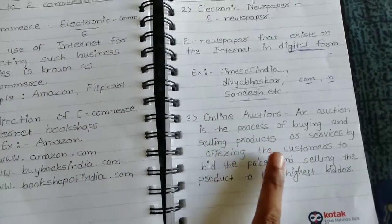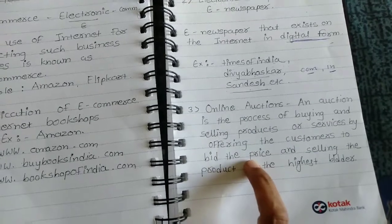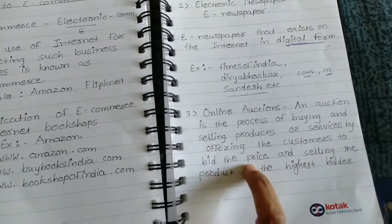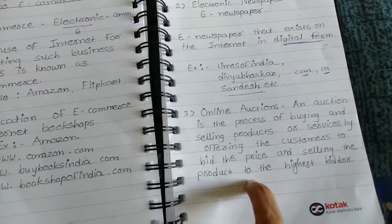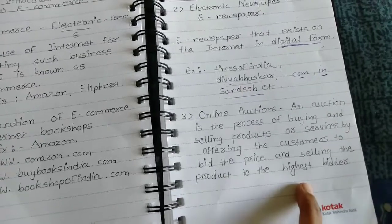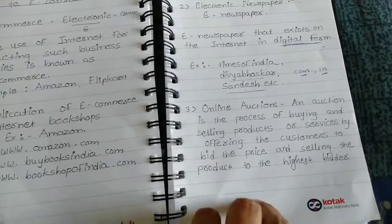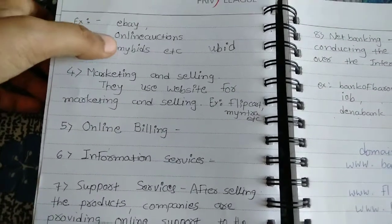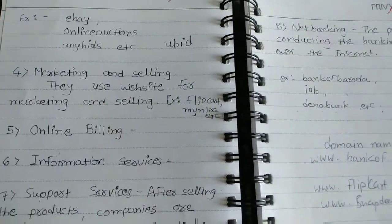It means the process of buying and selling the products or services by offering customers to bid for the highest price. If you want to do online auction, then you can use eBay, MyBids, and UBids — all these applications are used for online auction.